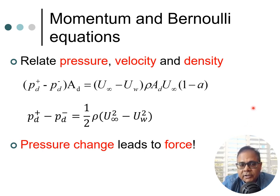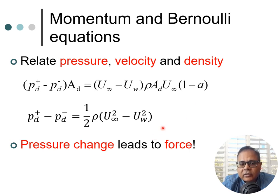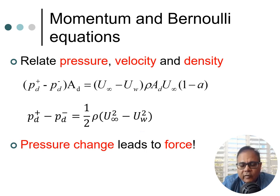We needed equations for pressure, which came from the momentum equation and Bernoulli's equation. These relate pressure, velocity, and density. The momentum equation gives: (p_d+ minus p_d-) times A_d equals (u-infinity minus u_w) times rho times A_d times u-infinity times (1 minus a). From Bernoulli, the pressure differential (p_d+ minus p_d-) equals half rho times (u-infinity squared minus u_w squared). We are interested in pressure changes across the actuator disk because this leads us to the force.